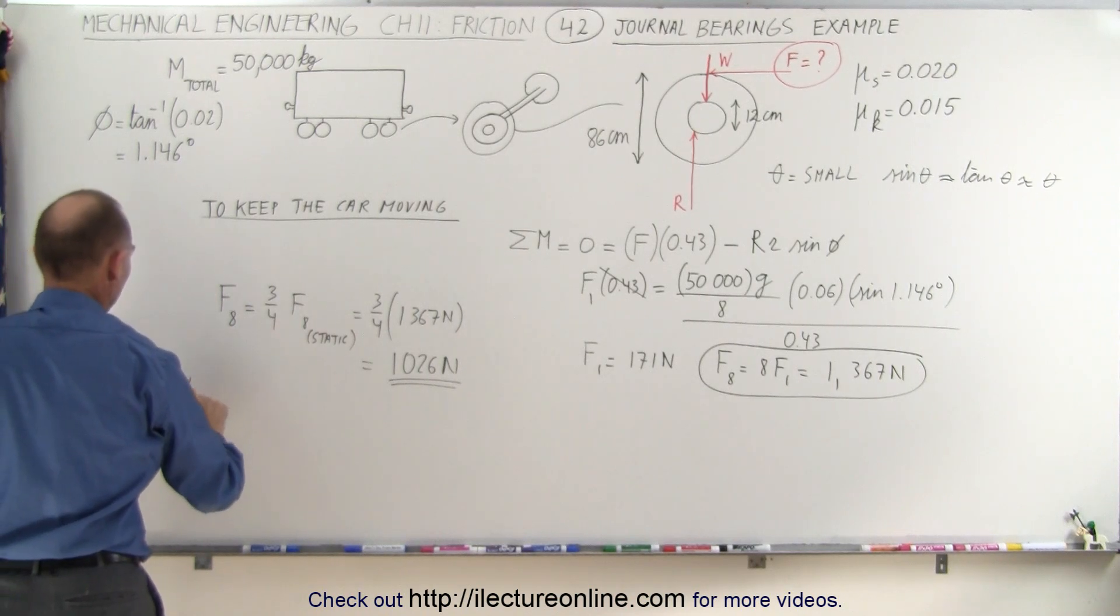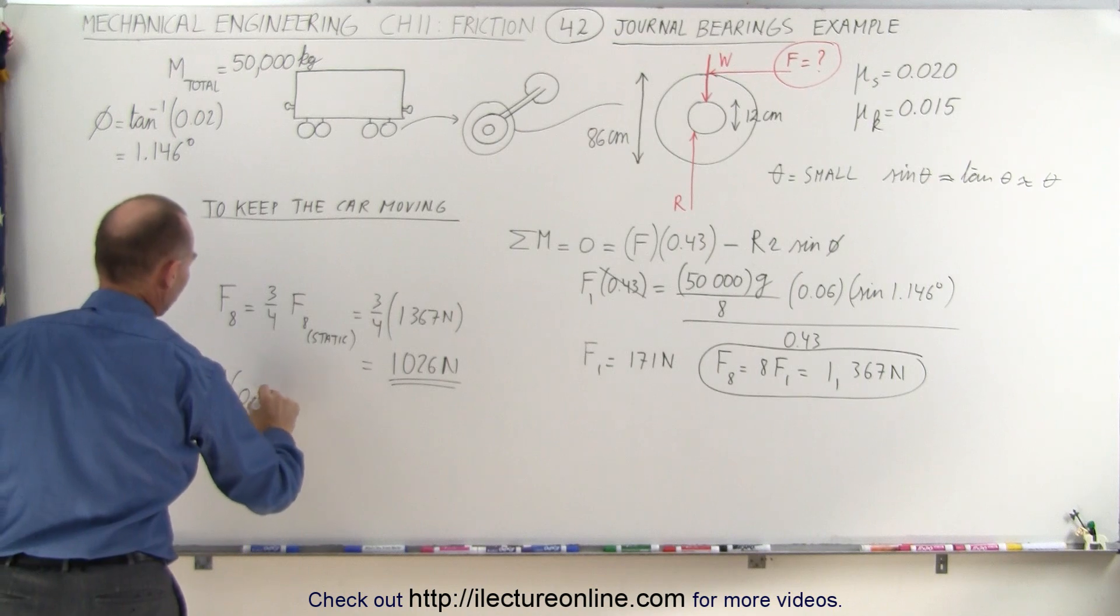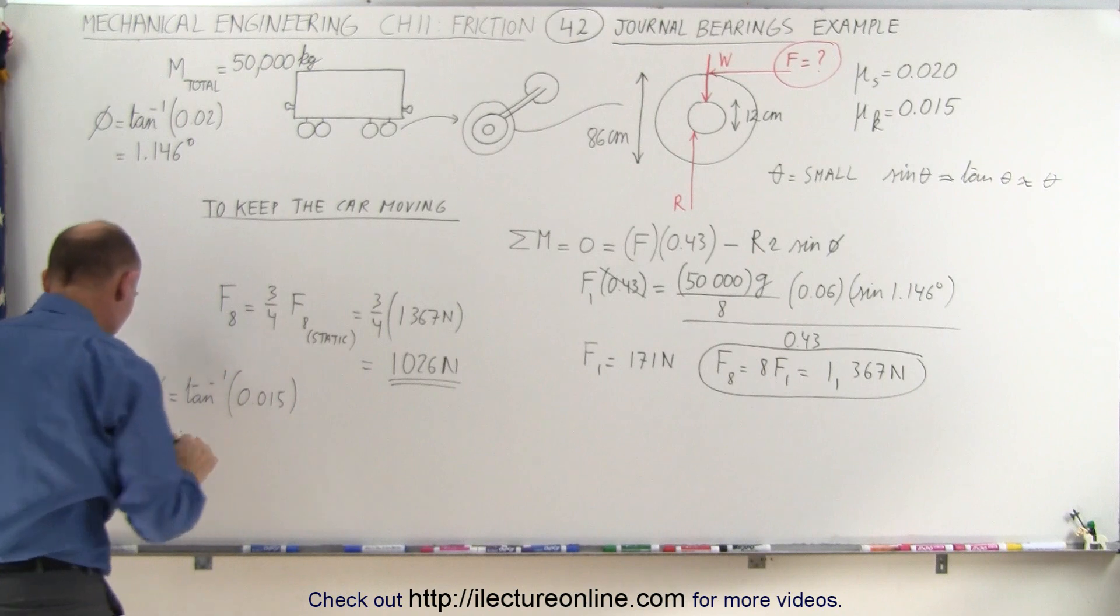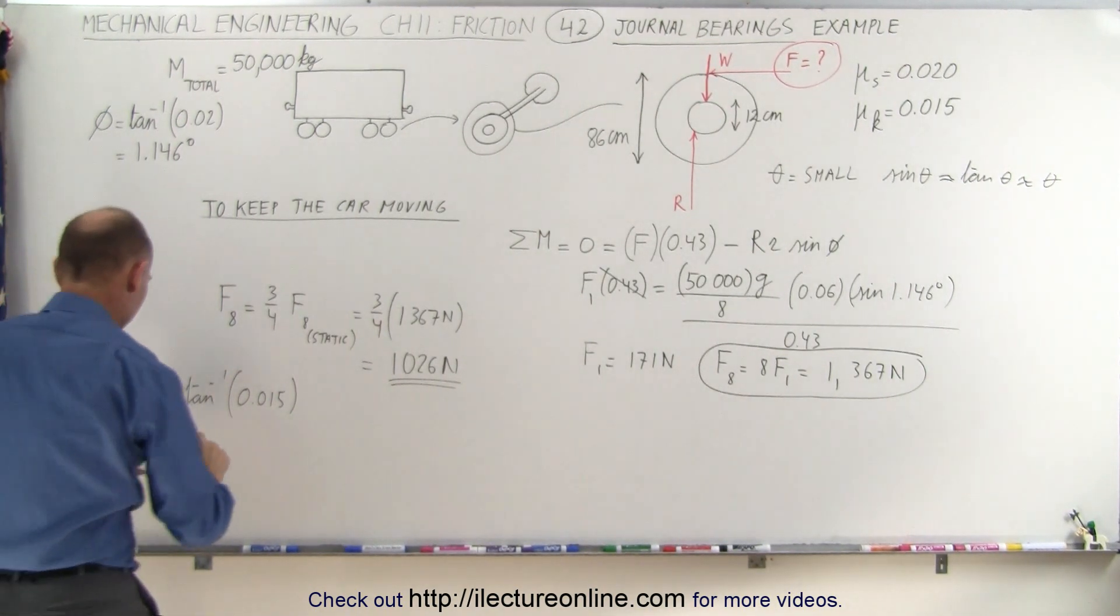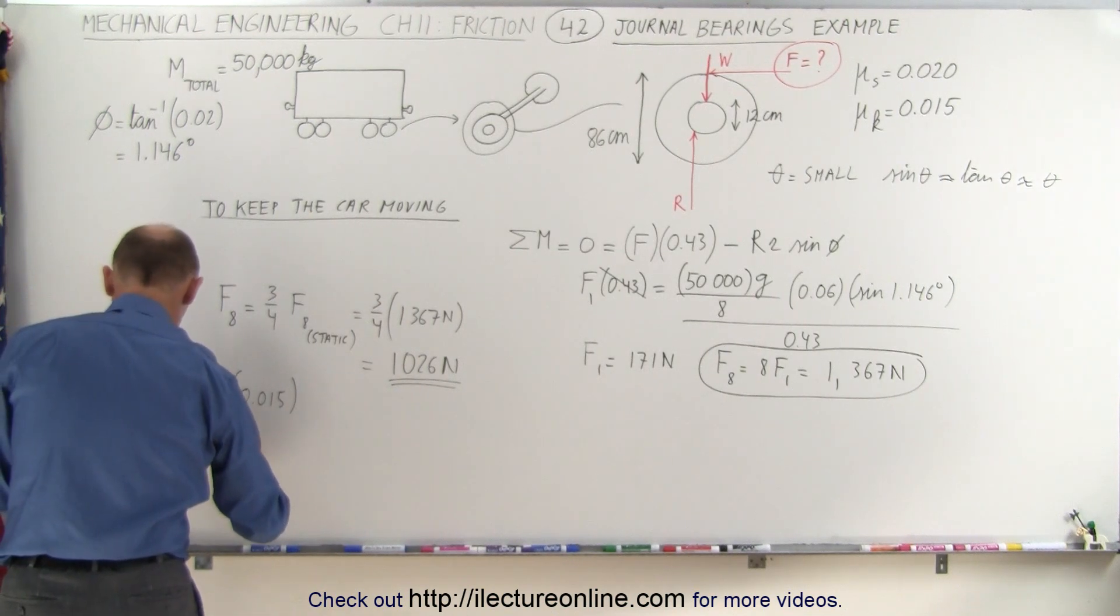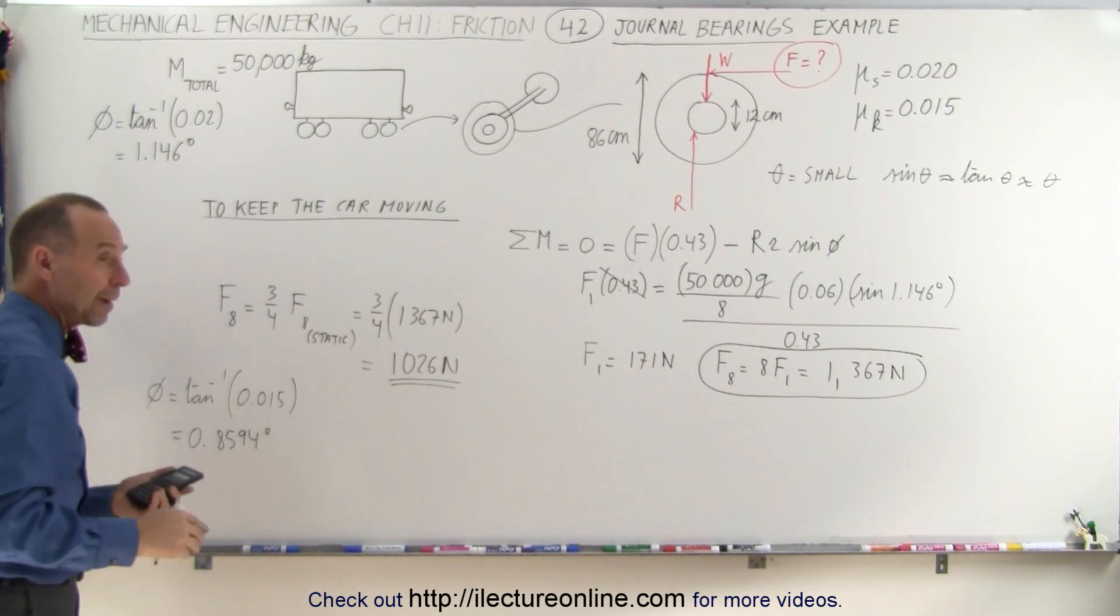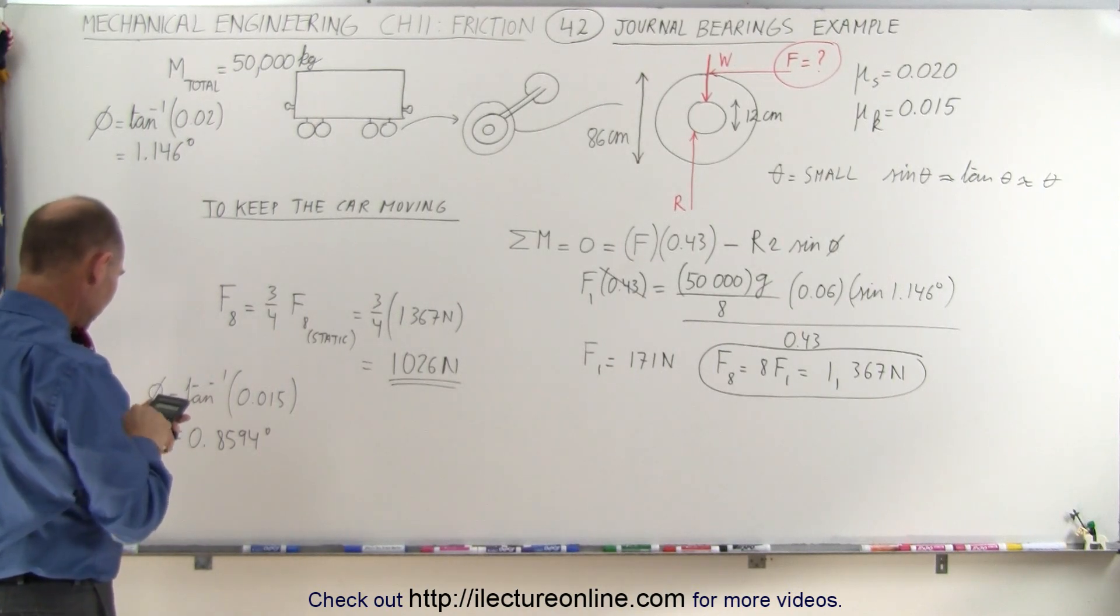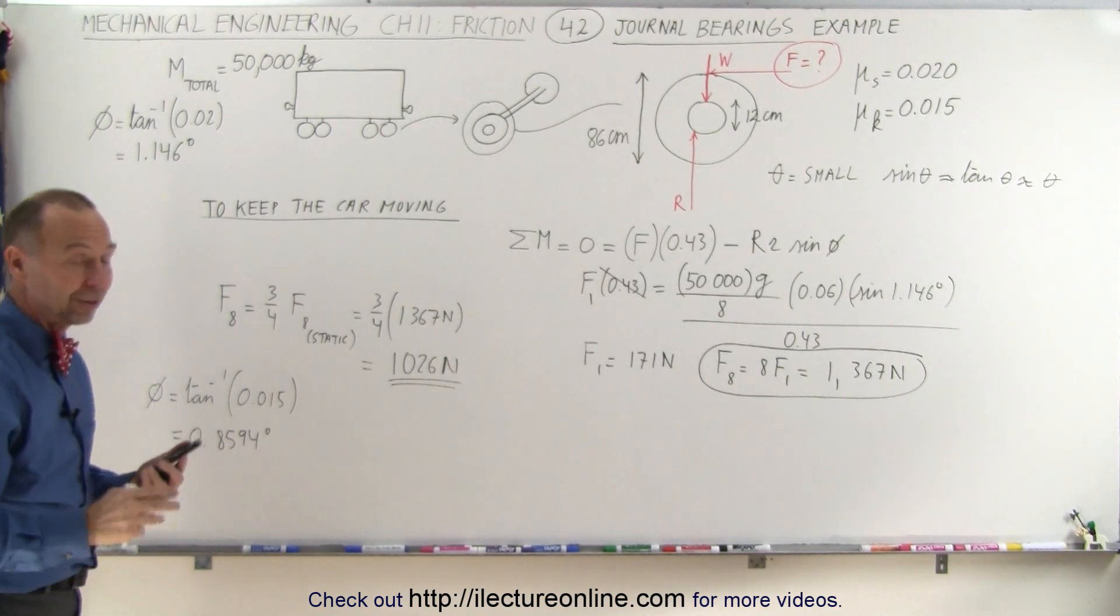So the angle is equal to the arctangent of 0.015. So that will give us a new angle, 0.015, take the arctangent of that and it's 0.8594 degrees. Notice that the angle relative to this should be about three quarters. If we take this angle, 1.146 multiplied by 0.75, we do indeed get something very very close to this. That's one indication.